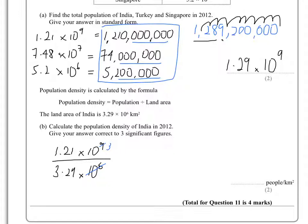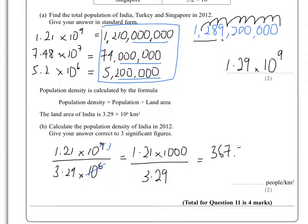So essentially we end up with 1.21 times 10 to the 3, which is 1,000, divided by 3.29. That gives us 367.781155 and a few more decimals. The answer asks for three significant figures, and since the fourth digit is greater than 5 we round up, so the answer becomes 368 people per square kilometre.